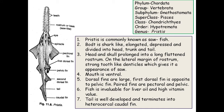The first example is Pristis, commonly called the sawfish. It has a long rostrum with tooth-like projections on its lateral margins, giving it its common name. Classification: Phylum Chordata, Group Vertebrata, Subphylum Gnathostomata, Superclass Pisces, Class Chondrichthyes, Order Hypotremata, Genus Pristis.